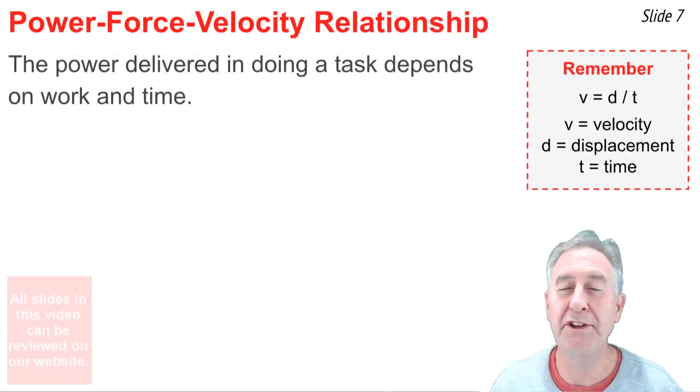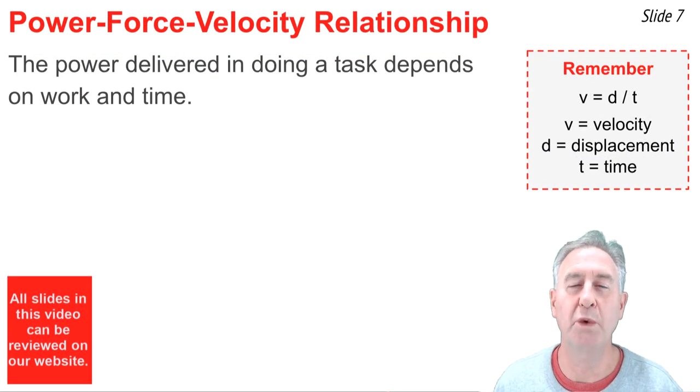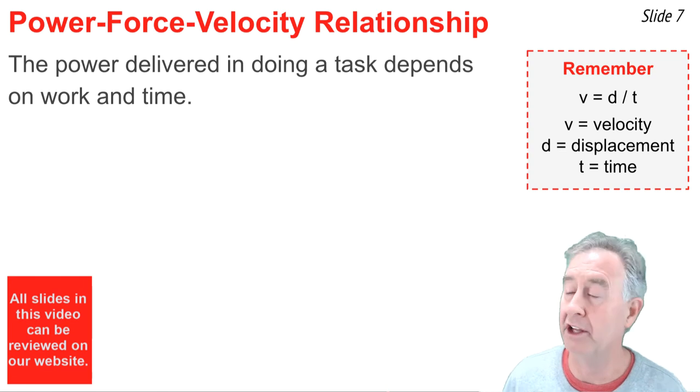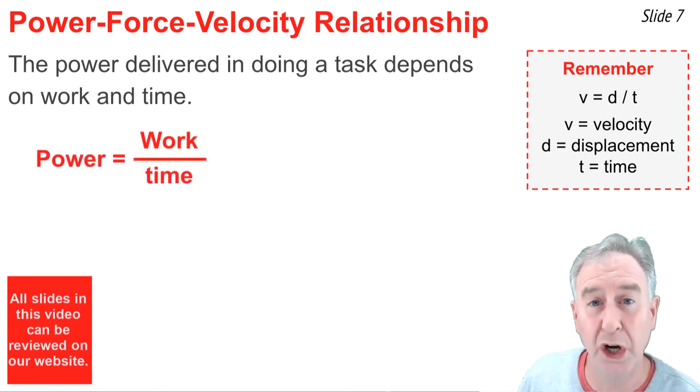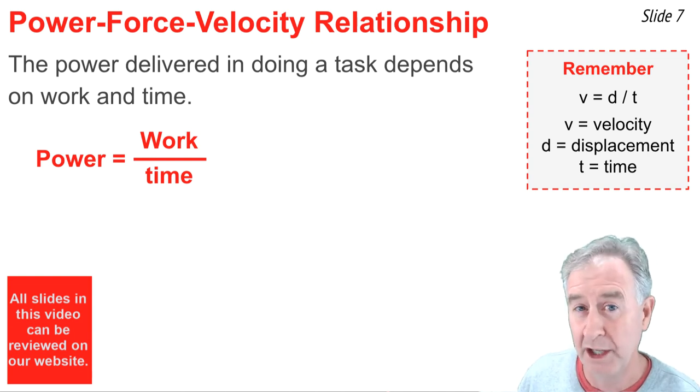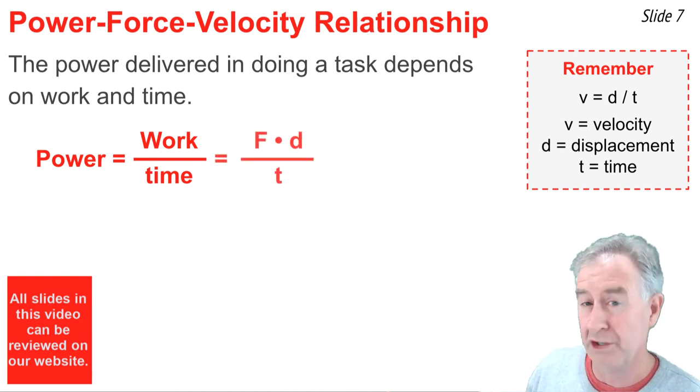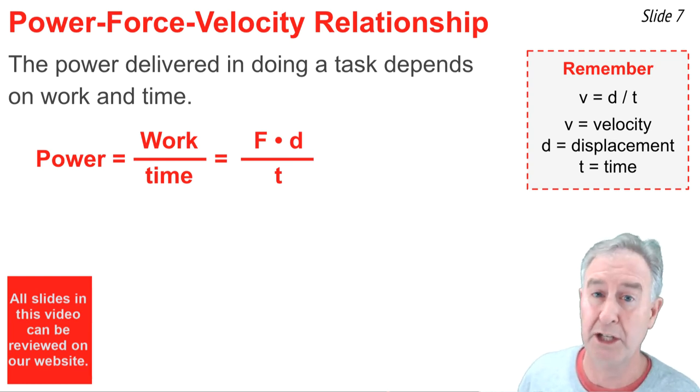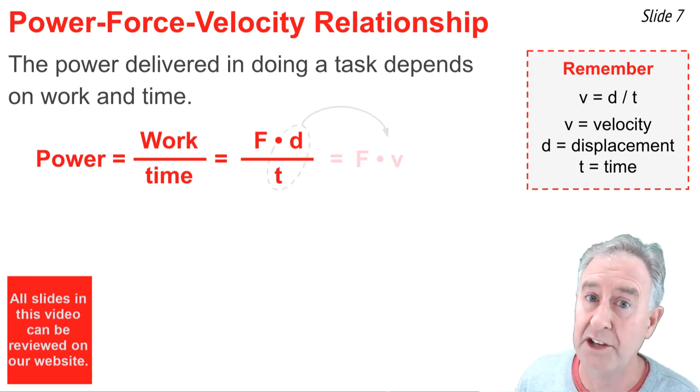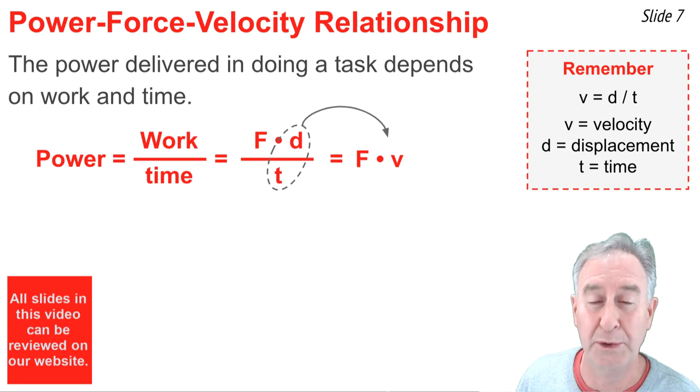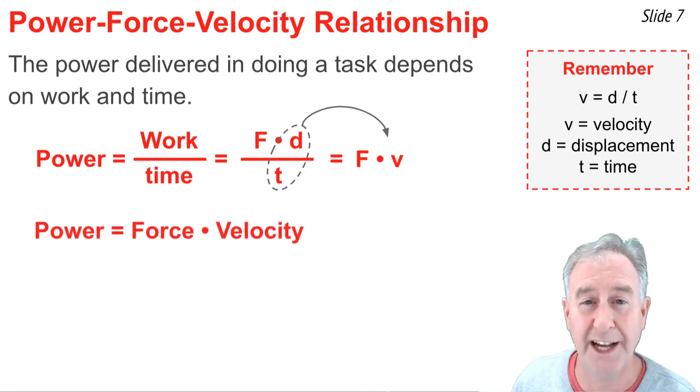The power delivered in doing a task depends upon work and time. We've expressed the relationship as power equals work divided by time. If we presume that the force and the displacement are in the same direction, we could call the numerator force times displacement. So, power equals force times displacement divided by time. Now, the d in the numerator and the t in the denominator might be recognized as the velocity. So, the power is equal to the f times the v, or power equals force times velocity.